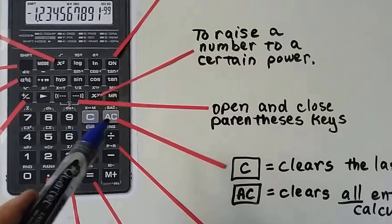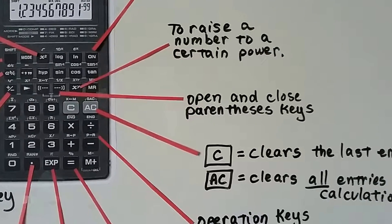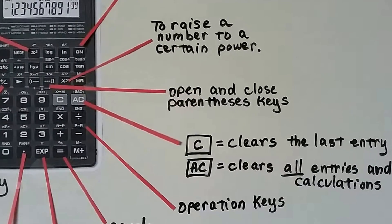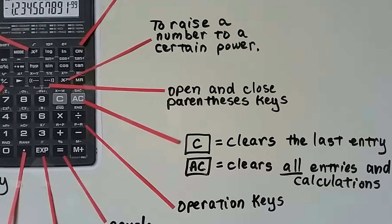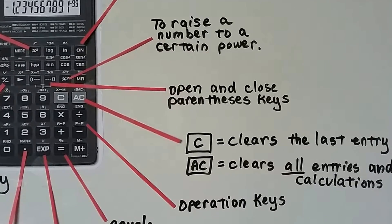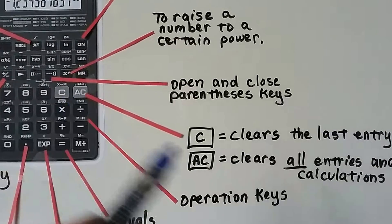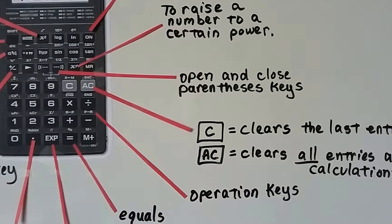And we have a C and an AC key. The C key clears the last entry you made. The AC clears all entries and calculations. So if you're working on a new problem, you can push AC to erase anything you've put in there from before.